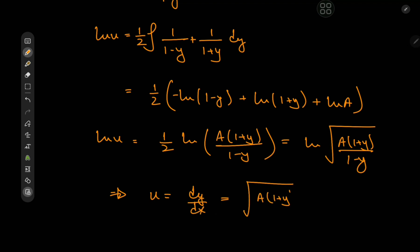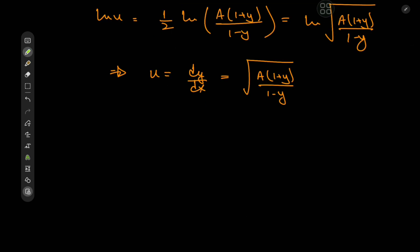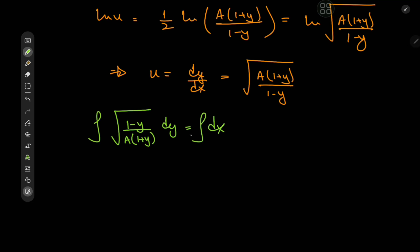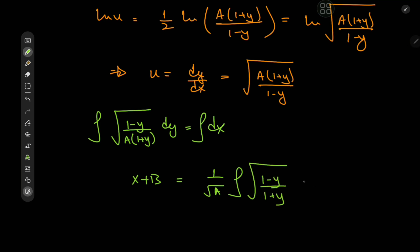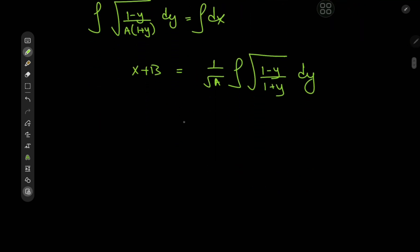Using the properties of the logarithm we can write this as log of root(A) times (1 plus y)/(1 minus y), and that implies our u variable which is dy/dx equals root(A) times (1 plus y)/(1 minus y). This is pretty cool because again we have a separable differential equation. Separating the variables gives us root(1 minus y) divided by (A times (1 plus y)) dy equal to dx, and integrating gives x plus B on the right.